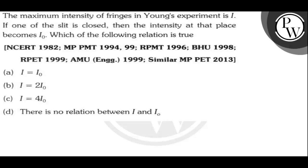Hello. Let us read the question. The question given is: the maximum intensity in Young's experiment is I. If one of the slits is closed, the intensity at that place becomes I₀. Which of the following relations is true? I = I₀, I = 2I₀, I = 4I₀, or there is no relation between I and I₀.